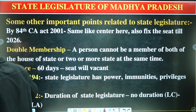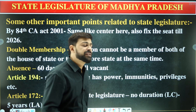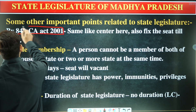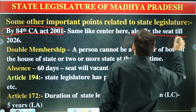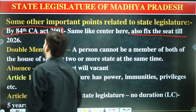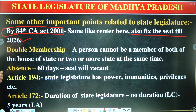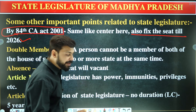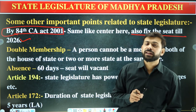Now let's look at important articles related to the state legislature. The 84th Constitutional Amendment Act, 2001 fixed seats till 2026, same as at the center. Double membership is not allowed — if acquired, the member is disqualified. A person can be either a member of the legislative assembly or the legislative council, not both.